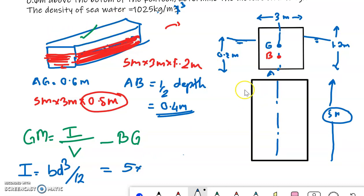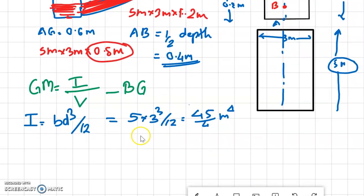5 into 3 is this plan. So D will be this 3 meter. So 5 into 3 cube by 12, this will be equal to 45 by 4 meter raised to 4. This will be the volume of pontoon in water.